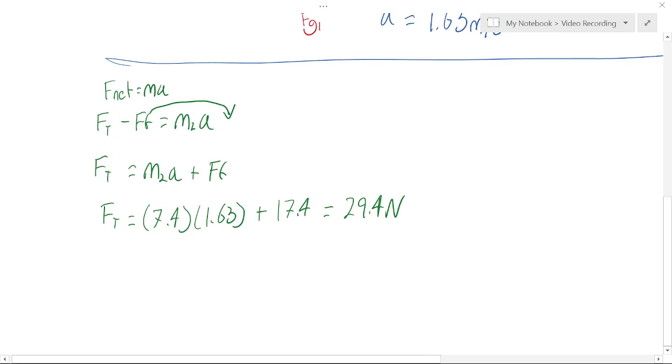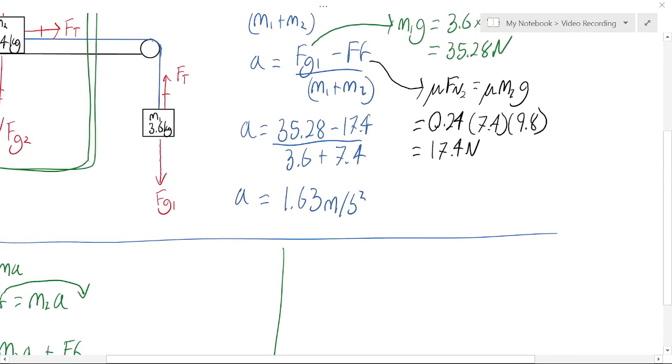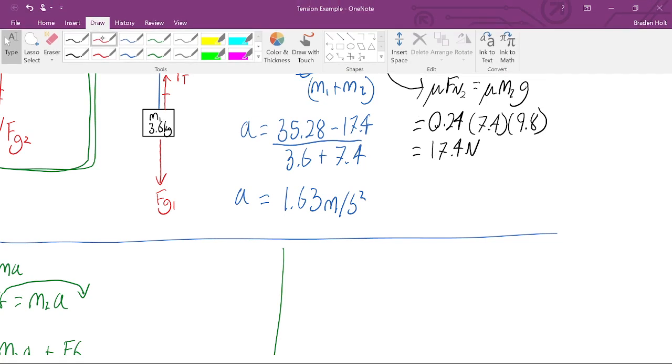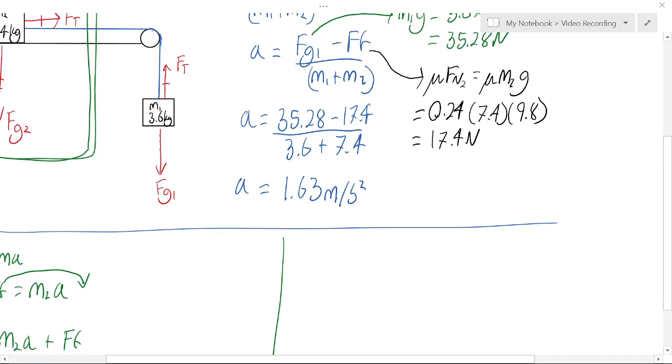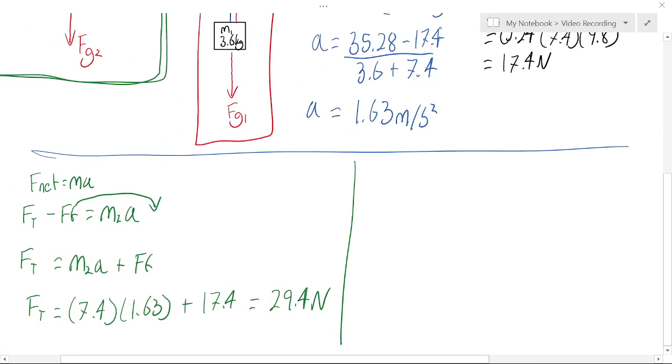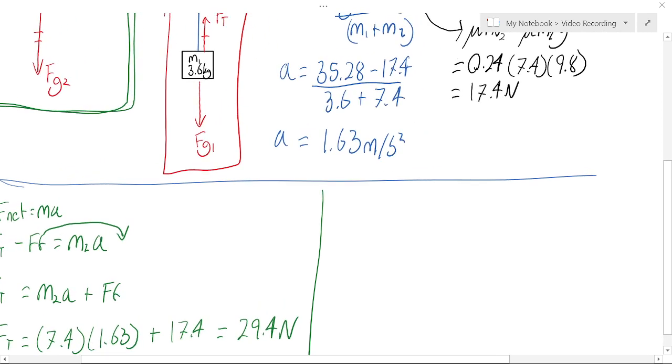Now if we had picked the other mass, if we had picked the hanging mass, which we call mass one, instead of the mass on the table, we would get a different formula for our fnet statement for the mass one,